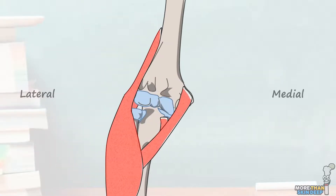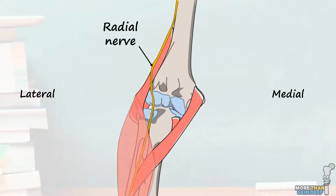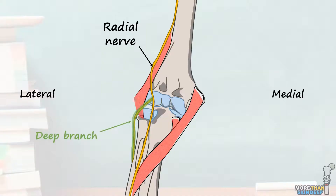Let's remove the roof and floor and take a look at the contents of the cubital fossa, discussing these structures from lateral to medial. The most lateral structure in the cubital fossa is the radial nerve. This nerve comes down the lateral part of the distal humerus to enter the cubital fossa by passing over the top of brachioradialis. It runs down the lateral part of the fossa before going deep to brachioradialis, where it divides into two branches: the deep branch, which supplies some of the extensor muscles in the forearm, and the superficial branch, which mostly supplies sensation in the hand.